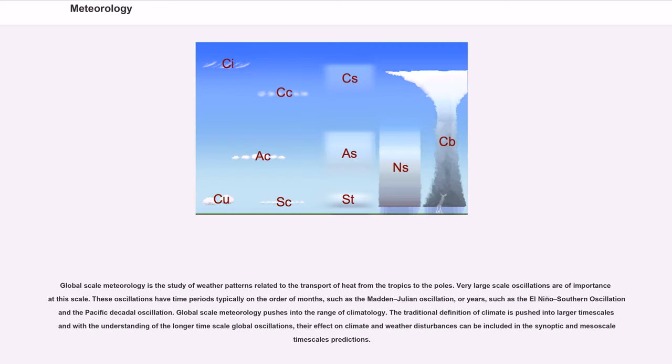Global-scale meteorology is the study of weather patterns related to the transport of heat from the tropics to the poles. Very large-scale oscillations are of importance at this scale. These oscillations have time periods typically on the order of months, such as the Madden-Julian oscillation, or years, such as the El Niño-Southern Oscillation and the Pacific Decadal Oscillation. Global-scale meteorology pushes into the range of climatology, and their effect on climate and weather disturbances can be included in the synoptic and mesoscale timescales predictions.